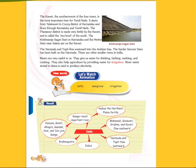Assalamu alaikum children, how are you? I hope you all are fine. Today I am going to continue our chapter India's rivers. The Kaveri is the southernmost of the four rivers and is the most important river for Tamil Nadu.